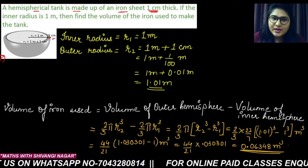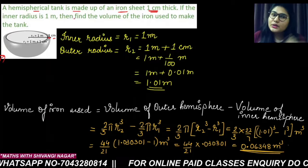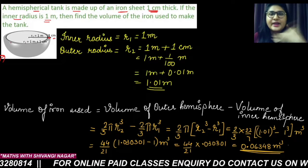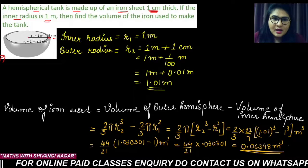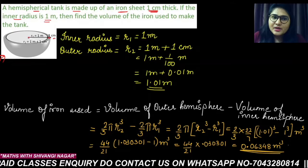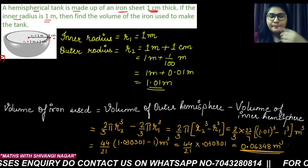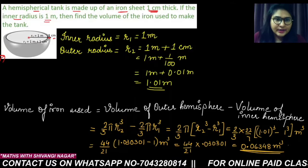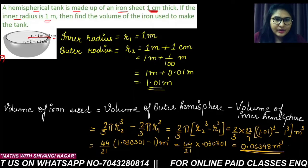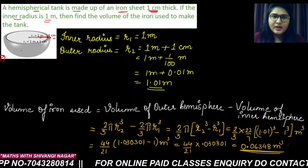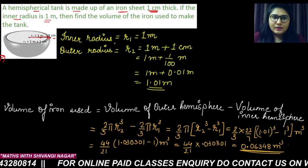Also we are given the inner radius of that hemispherical ball. That means if this is the center of this hemispherical ball, the distance between the inner boundary and the center—if you take this as r1—this is called the inner radius r1, which is given to us. It is given 1 meter, so inner radius, if we let it as r1, it is given 1 meter.